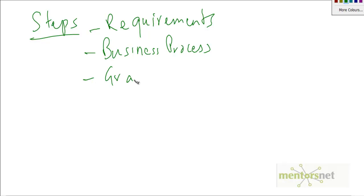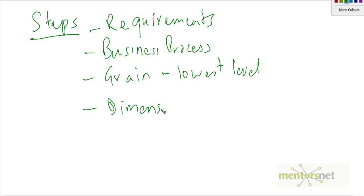Next is the grain of the process — what is the lowest level of data that needs to be collected in the fact table? For example, if the grain is monthly, we just need to store monthly data. An example is measuring monthly customer visits to a website. Next, we define what dimensions we want to measure the business against — things like customer, time, product, region, and promotions are all very typical dimensions. Finally, we define the measures: what are the facts we want to store and record?